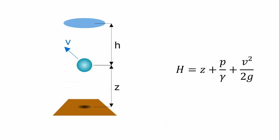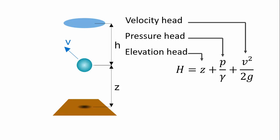So, this is the total head of the water particle. Z is the elevation head, p over gamma is the pressure head, and v squared over 2g is the velocity head. Here it is, total head and each one of its components.